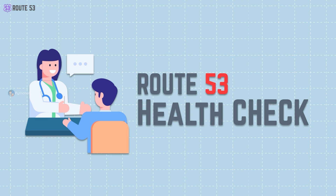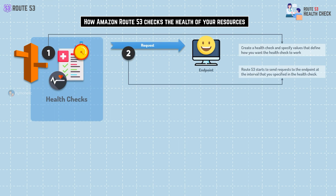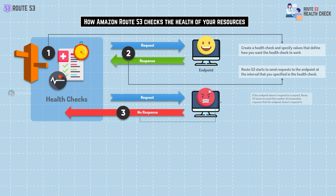This helps ensure that your application or website stays up and running, which is obviously super important if you want happy users. Let's talk more about how Route 53 checks the health of your resources. We send a request and it hits the resource that works just fine — it's a happy resource and you get the proper response back. Moving on, we send the request to a bad resource and we get an error response.